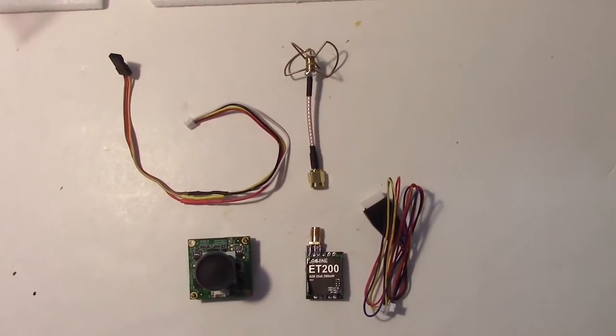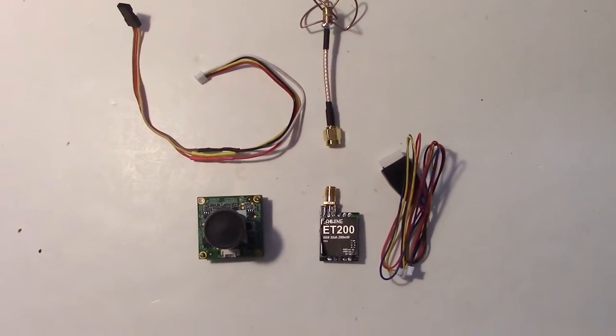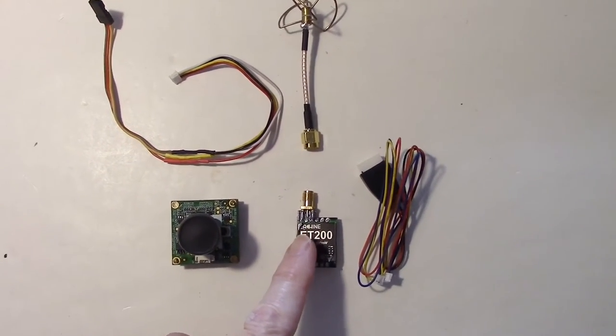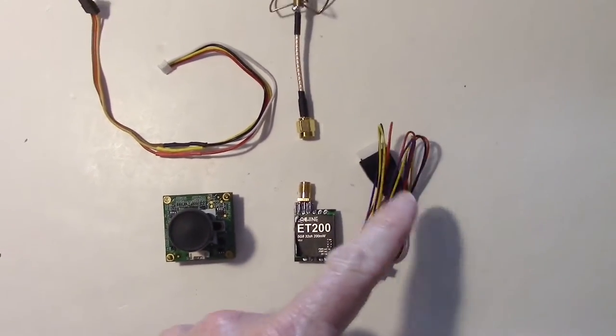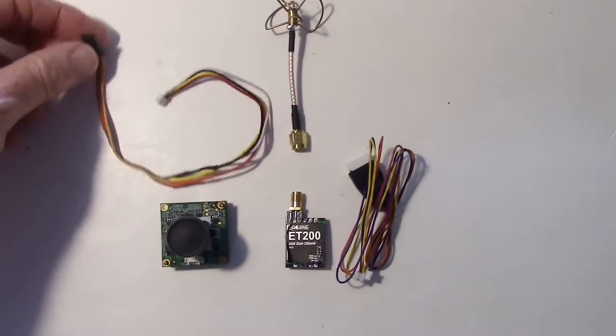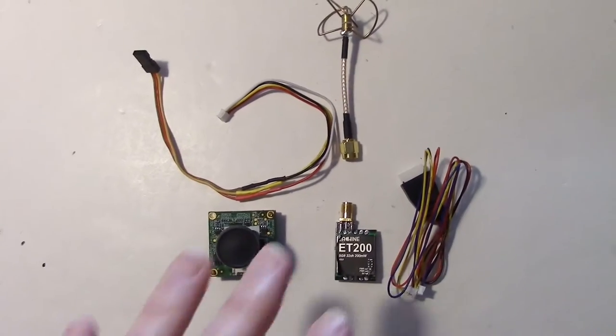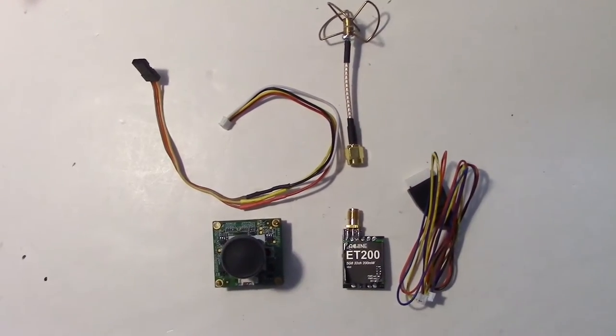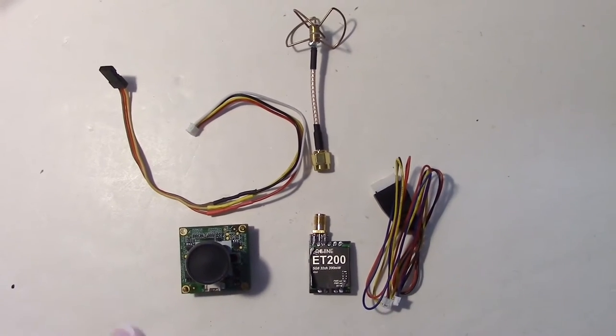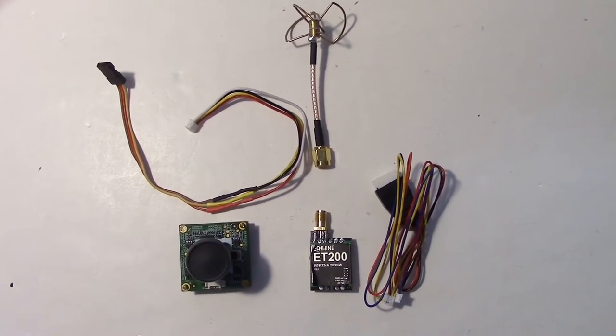Here's the basic FPV setup I'm going to use. We have an Eachine ET200, this is the cable for that, a circular polarized antenna, and one of the harnesses. This is the basic FPV setup, but I may also add a flight controller with a built-in OSD.